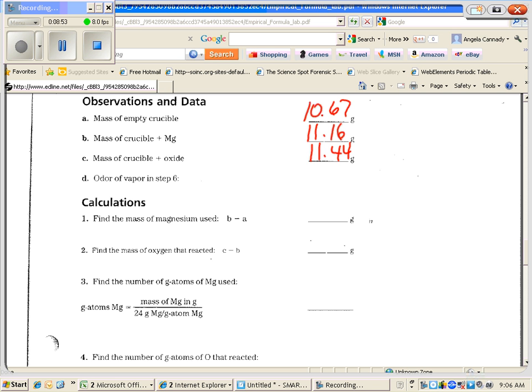We're not going to worry about the vapor. If you'll notice right here in number one, it says find the mass of the magnesium and it says B minus A. Here's B, here's A. B minus A. So we're going to say 11.16 grams minus 10.67 grams, and we're going to get 0.49 grams. And that is our grams of magnesium.